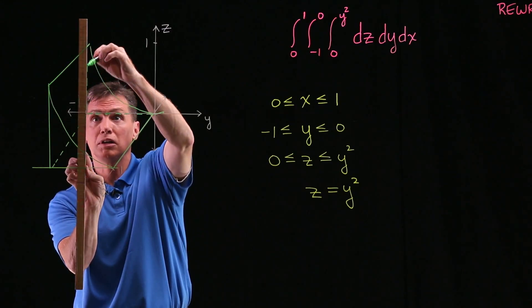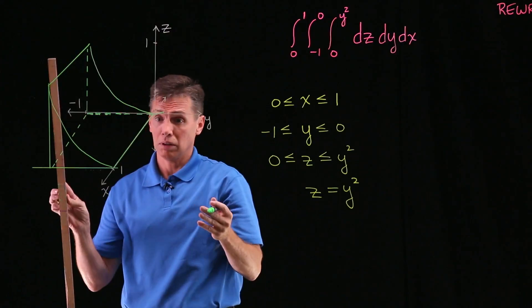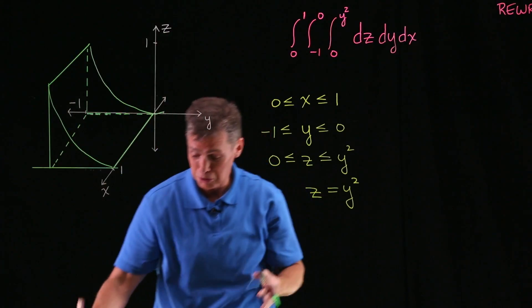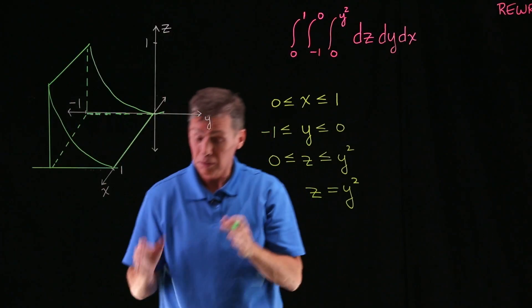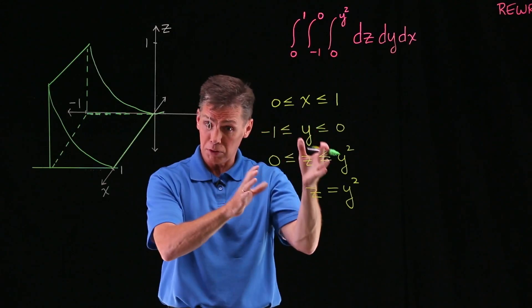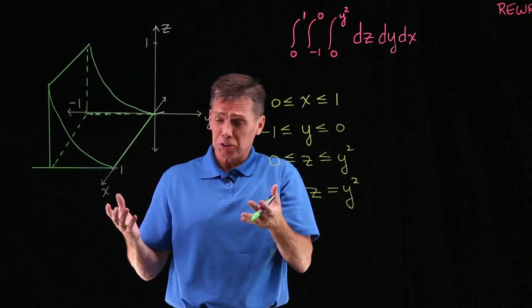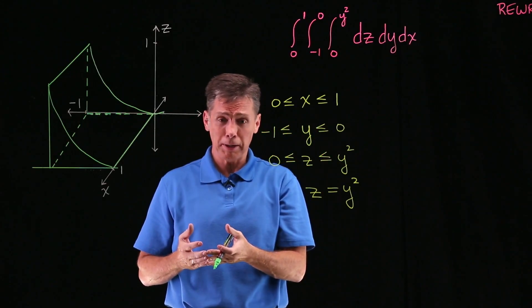And also here where y is negative 1 but x is 0, and that would be like a dash, dash, dash line. And I think I've actually got it. It's always hard to draw in three dimensions, but decent representation of these inequalities, and it looks kind of like a skateboard ramp or something like that.